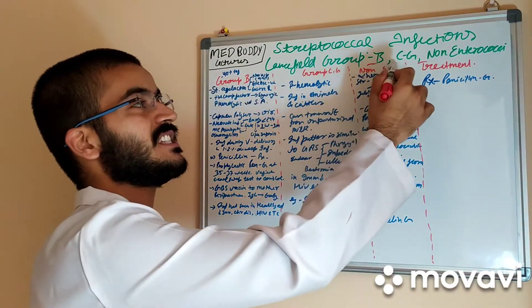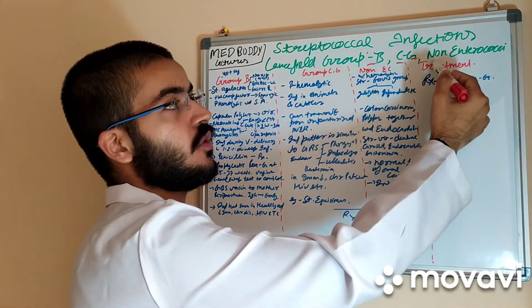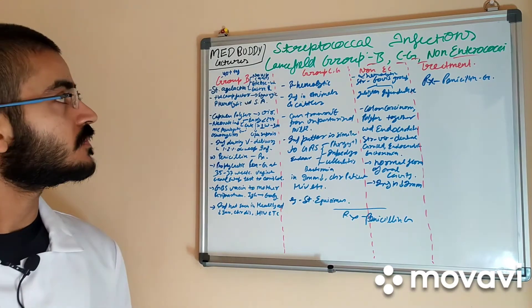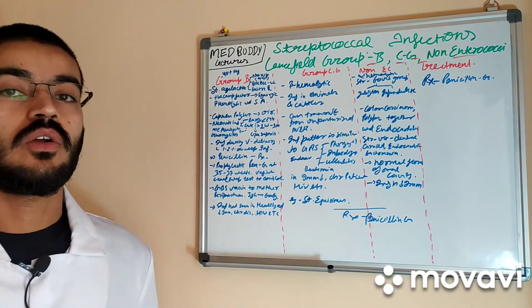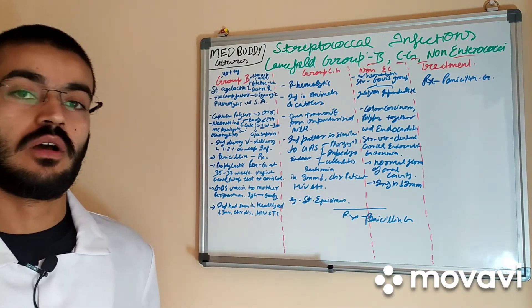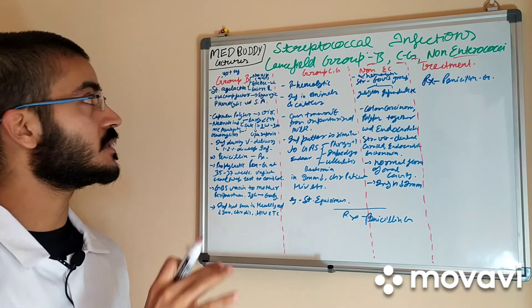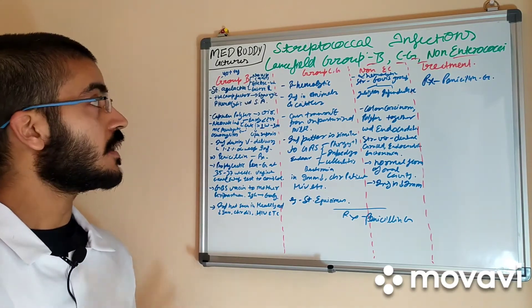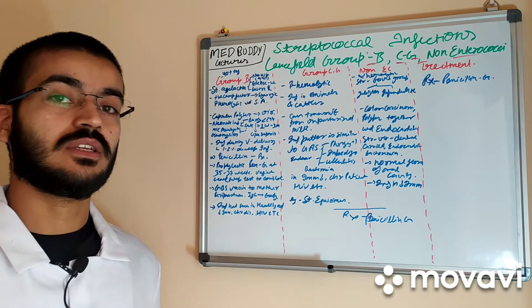Lansfield group B, C, G, and non-enterococci group. Group B forms normal flora of vagina in 40% of women. It can also be seen in anal cavity and urethra.